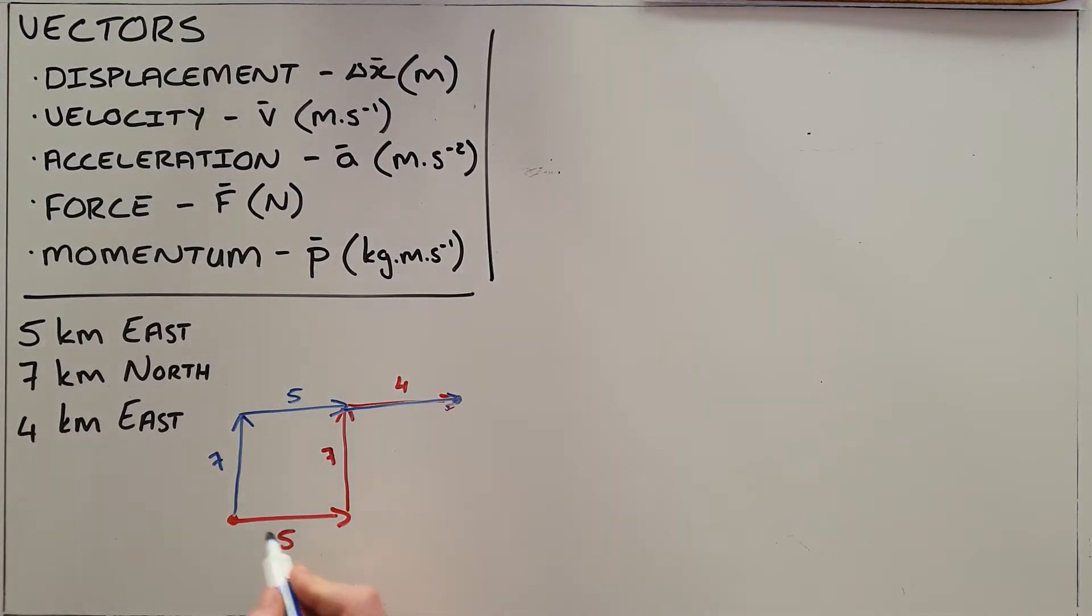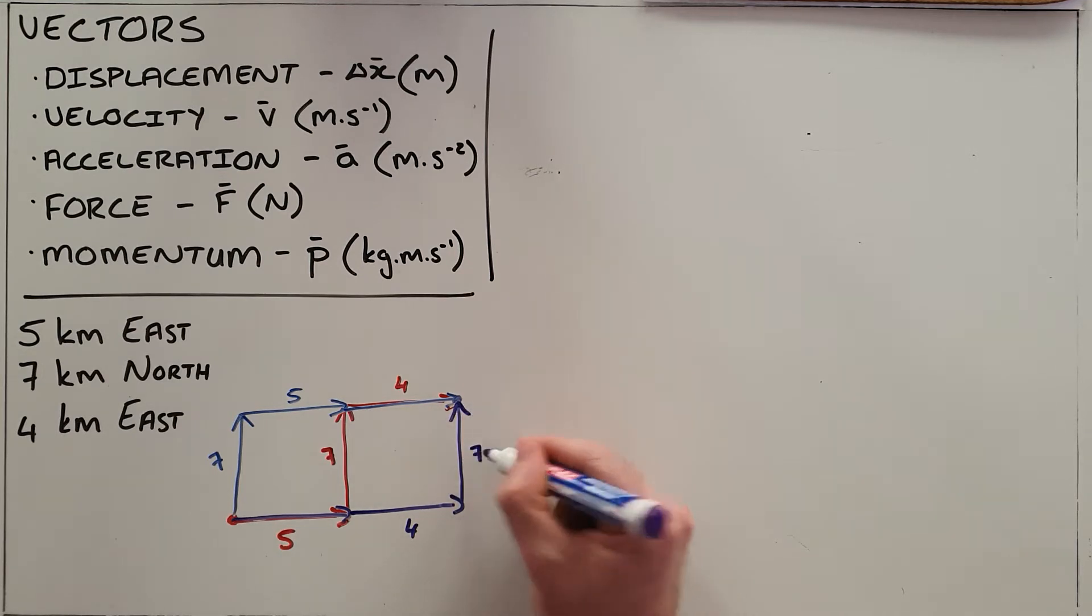And finally, the third way in which this could have been done would have been first by going five kilometers east and then four kilometers east and then seven kilometers north. All of this illustrates that the order in which vectors are added does not matter as long as they maintain their magnitude and direction.